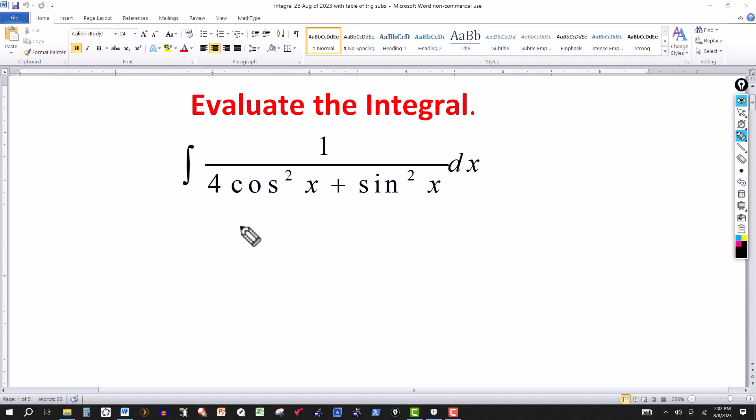Try to look for a u substitution here, and I think we'll divide the numerator and denominator by cosine squared of x. I'm going to divide the numerator by cosine squared of x. Same thing with the denominator.